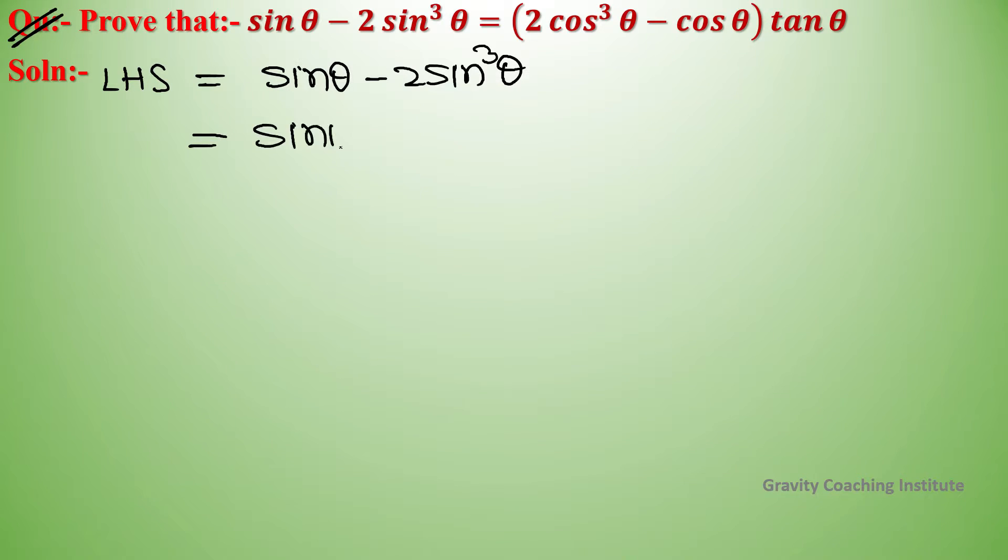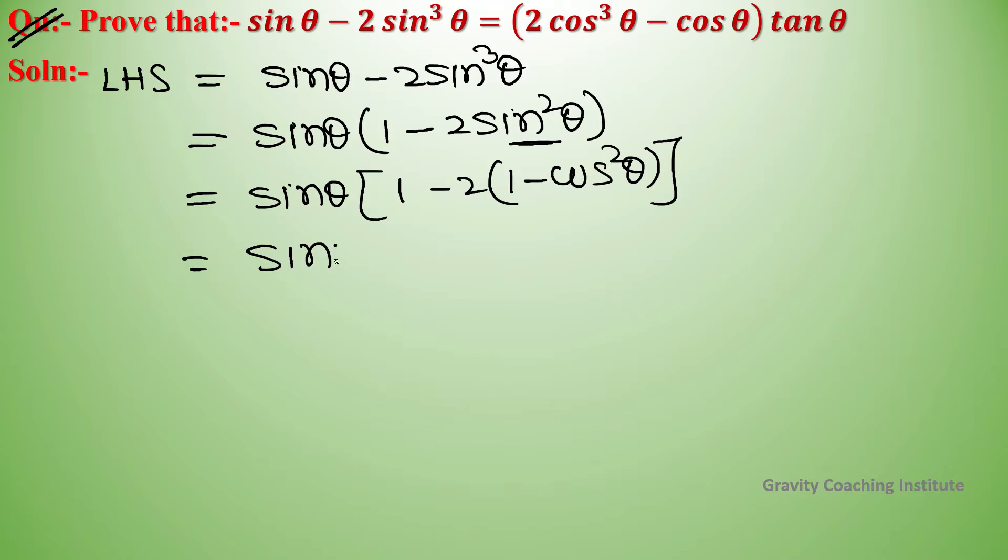Factoring out sin theta gives 1 minus 2 sin square theta. We will change sin square theta to cos using the formula sin square theta equals 1 minus cos square theta, giving sin theta times 1 minus 2 times 1 minus cos square theta.